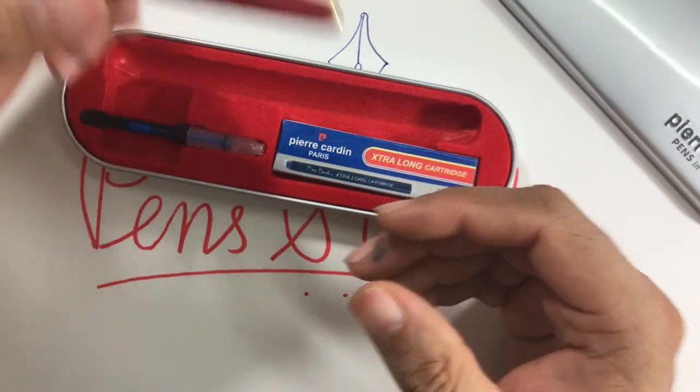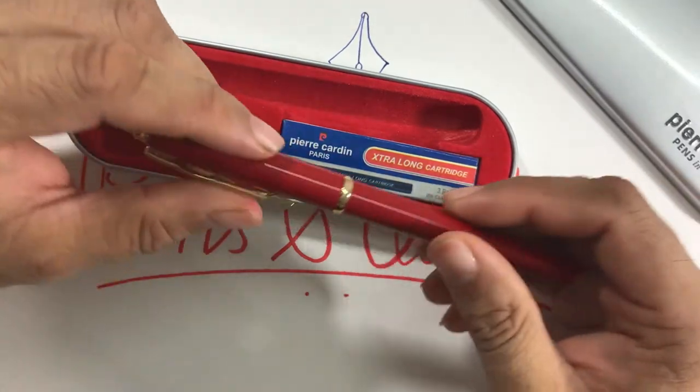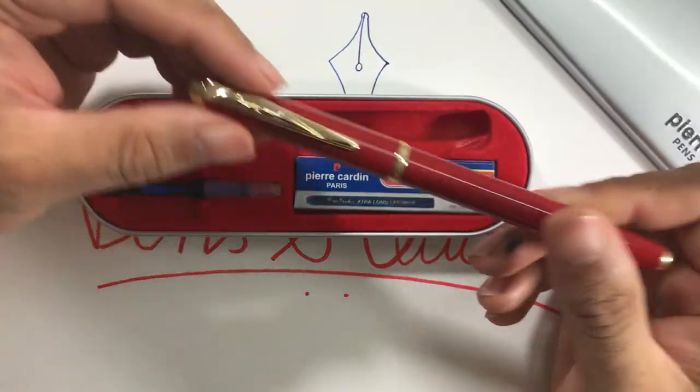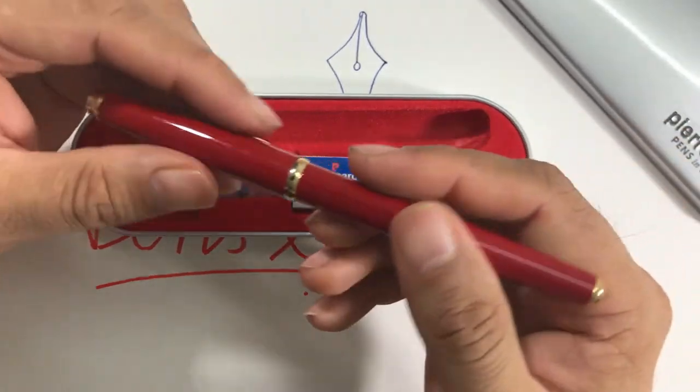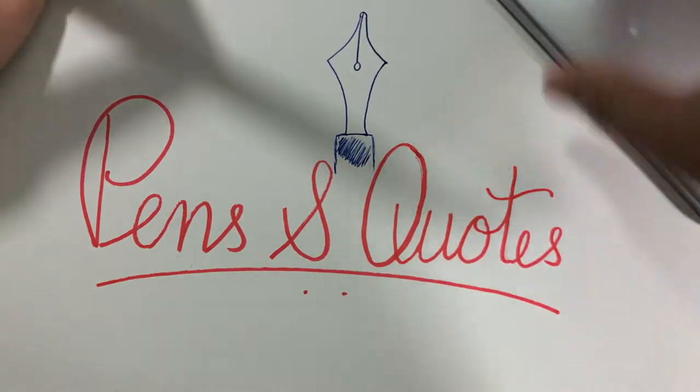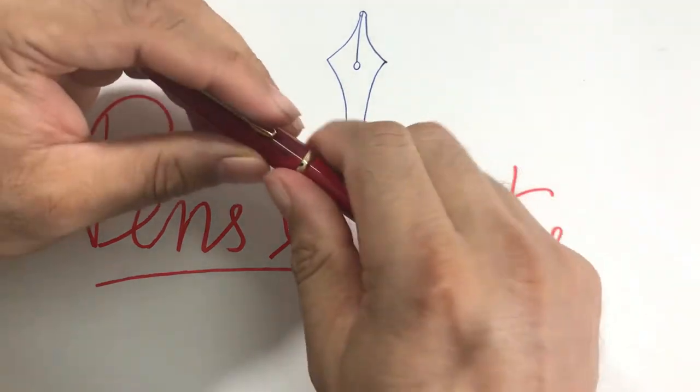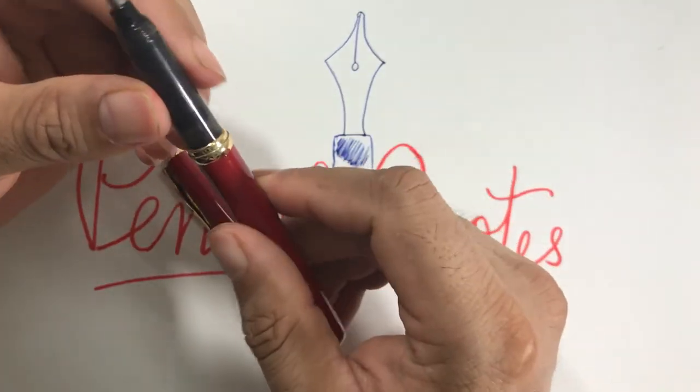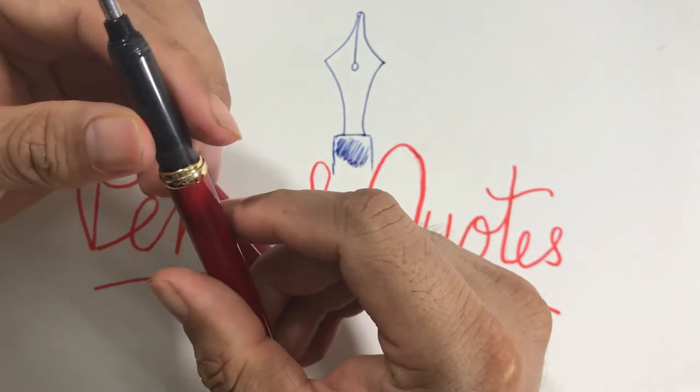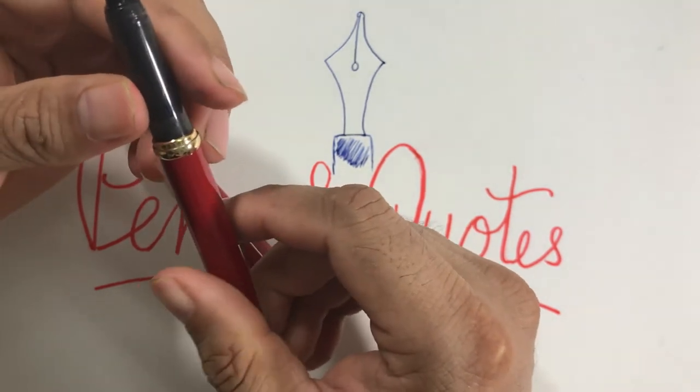This pen is called Pierre Cardin Memento. This is a fully steel pen, quite heavy, feels good in the hand. There's a small nib that you generally will find in Pilot Vanishing Point or some Chinese pens.